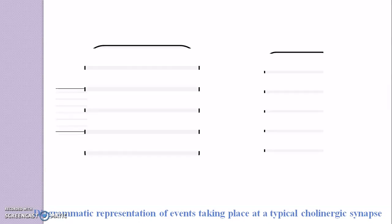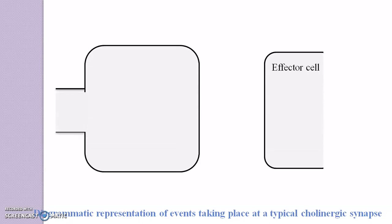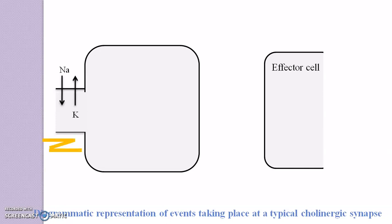Now we discuss the events taking place at a typical cholinergic synapse. Here we have the neurons — the afferent and efferent neuron. There is a synthesis of acetylcholine in the neuron, which is in some way controlled by the passing of impulses themselves. The nerve impulse passes when there is an entry of sodium inside the neuron and an exit of potassium from the neuron.